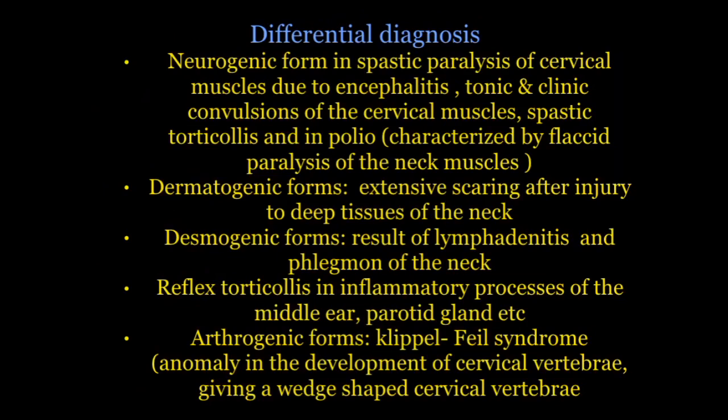The second differential diagnosis is the dermatogenic forms of torticollis, which occur as a result of extensive scarring after injury to deep tissues of the neck. The myogenic forms of torticollis are a result of lymphadenitis and phlegmon of the neck. Reflex torticollis occurs in inflammatory processes of the middle ear and the parotid gland.